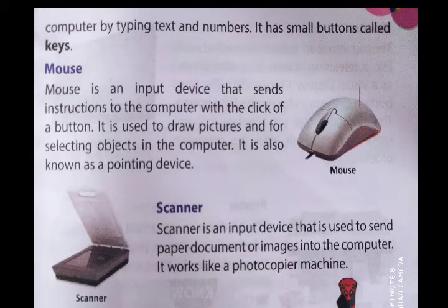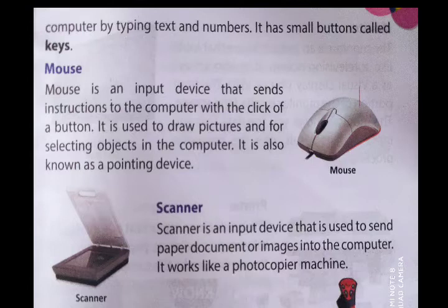Next is the mouse. The mouse is an input device that sends instructions to the computer with the click of a button. It is used to draw pictures and for selecting objects. It has three buttons — right click, left click, and a wheel in the center. It is also known as a pointing device.